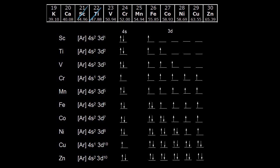Scandium is [Ar] 4s² 3d¹ — two electrons in 4s, one in 3d. Titanium is [Ar] 4s² 3d². Adding that second d electron, we don't pair spins, following Hund's rule. For vanadium, one more electron is added to another d orbital — not one already started — again following Hund's rule, giving [Ar] 4s² 3d³.